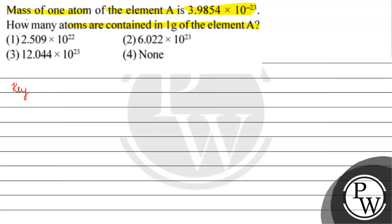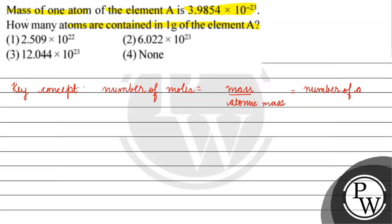The key concept for this question is: number of moles equals mass divided by atomic mass, which also equals number of atoms divided by Avogadro's number. We have been given the mass of one atom.